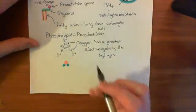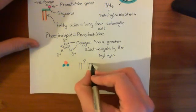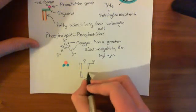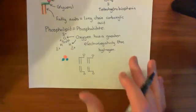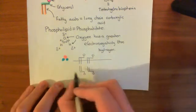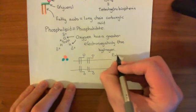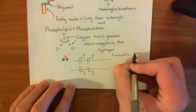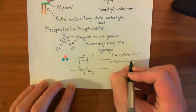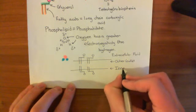What you can create is a phospholipid bilayer where you have these phosphate groups lined up on one side and more phosphate groups on the other side, with the hydrophobic tails all facing the inside. You form two layers of phospholipids — that's what makes it a bilayer. One layer of phospholipids faces the extracellular fluid — this is the outer leaflet of the phospholipid bilayer. Then you have another layer called the inner leaflet of the phospholipid bilayer.